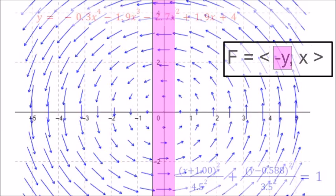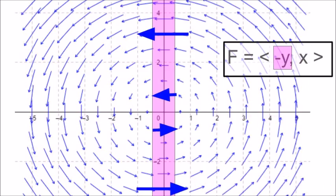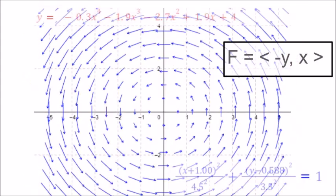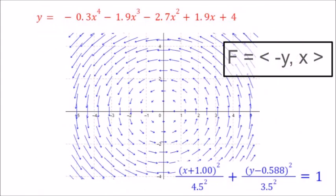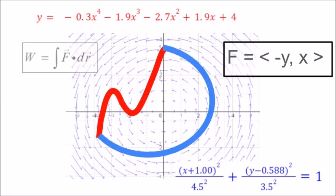Now the x direction — same sort of thing with a negative sign thrown in. A whirlpool, an integral, and a dot product.